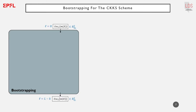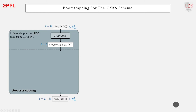Given a ciphertext at level 0, bootstrapping outputs a ciphertext encrypting a close approximation of the same message but at level L larger than 0. Improving the bootstrapping procedure of CKKS has been the focus of several works in the past few years, but the high-level circuit has remained the same. First, the ciphertext is expressed back to the highest level using the natural RNS basis extension, yielding a ciphertext that still encrypts m yet only up to some integer multiple i of q_0.